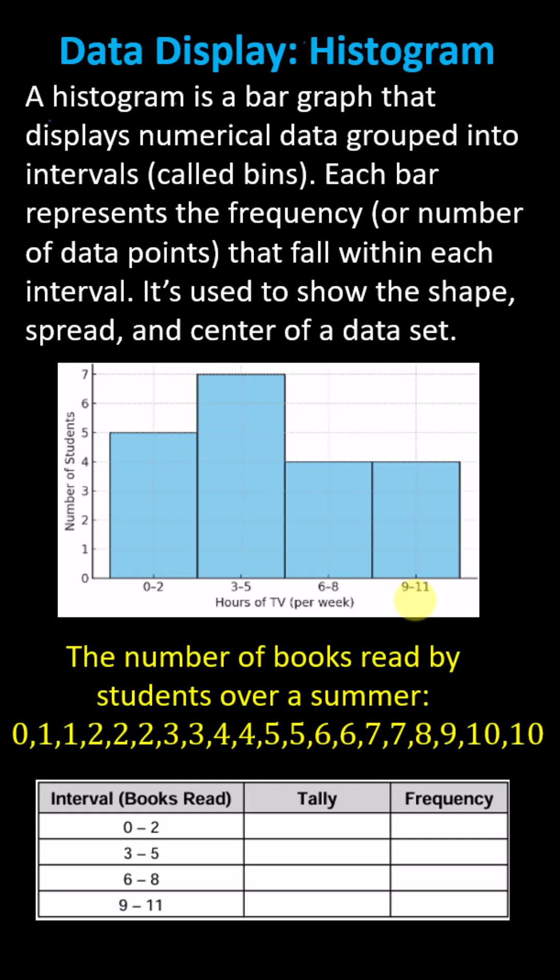Each bar represents the frequency or number of data points that fall within each interval. The frequency for the first bin 0 to 2 is 5, the frequency for the second bin 3 to 5 is 7, and so on.